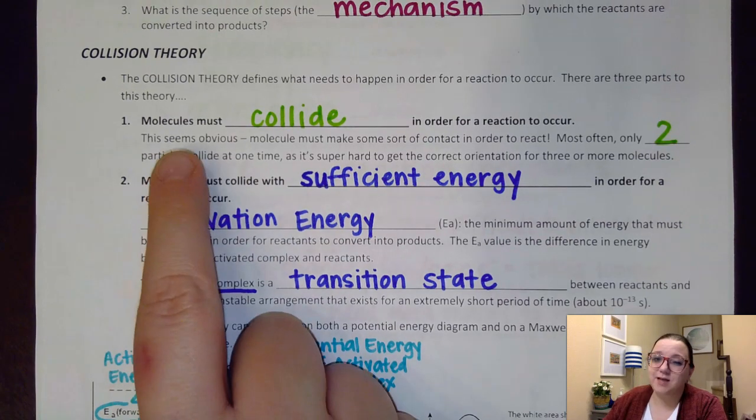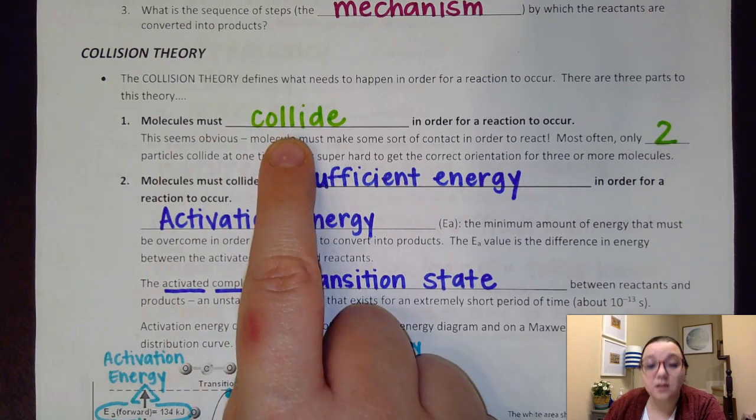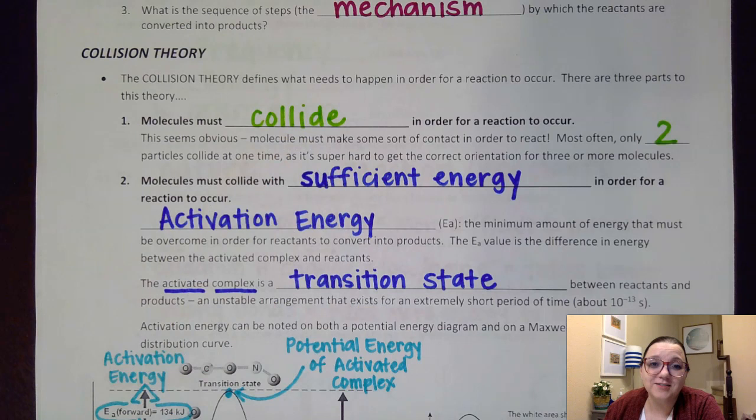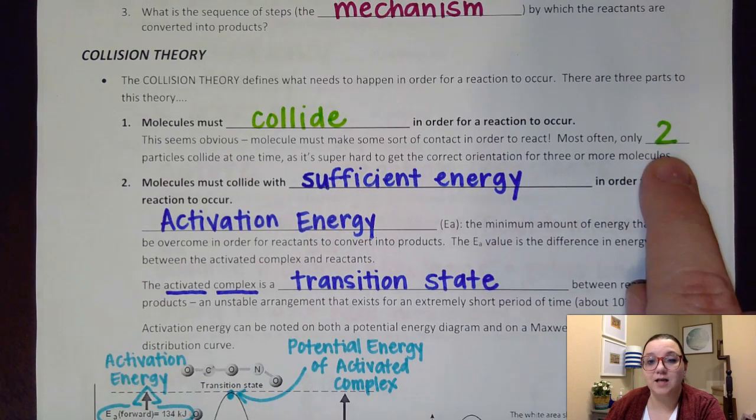The first of those is kind of the obvious one in the fact that molecules must collide in order for a reaction to occur. If we want to create products, we're going to have to get the reactants to interact with each other, and most of the time we do two particles colliding at one time.